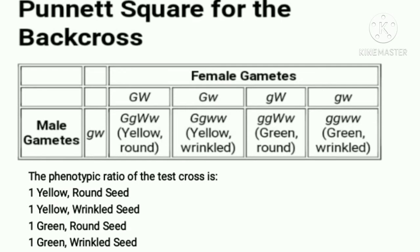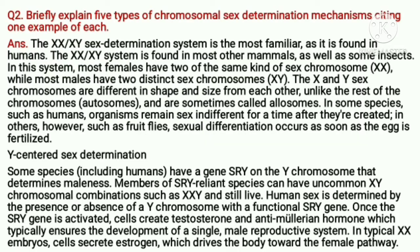Question 2: briefly explain five types of chromosomal sex determination mechanisms, citing one example of each.